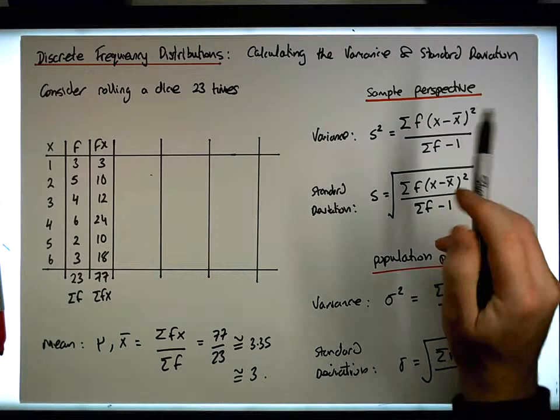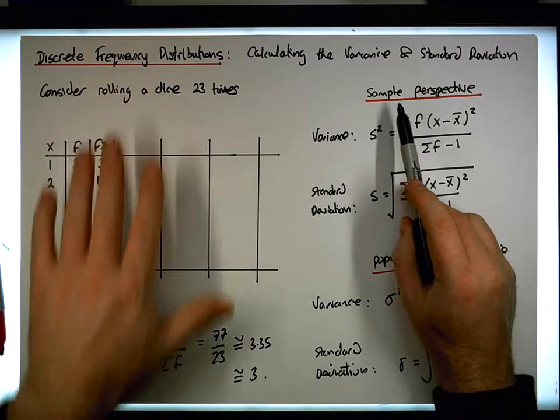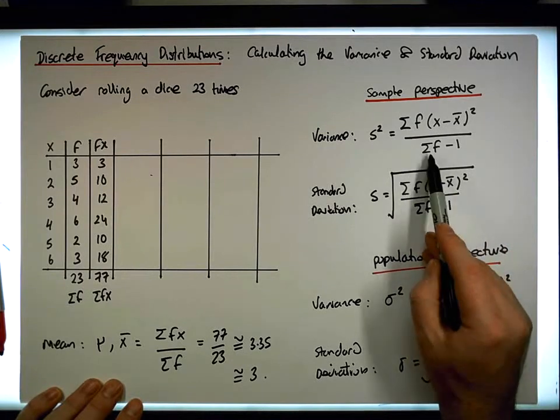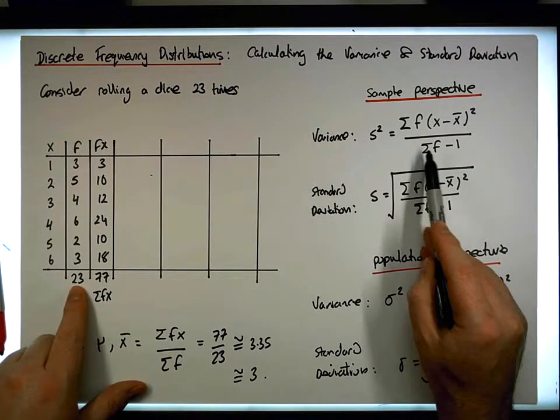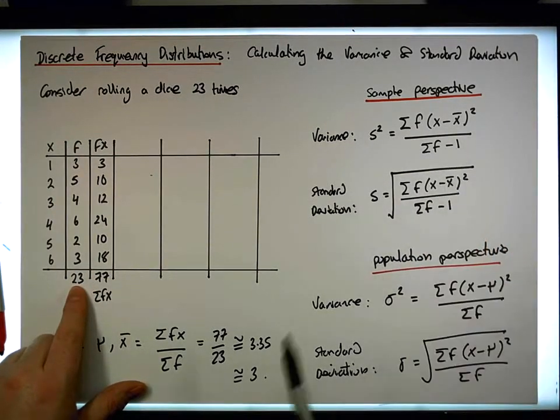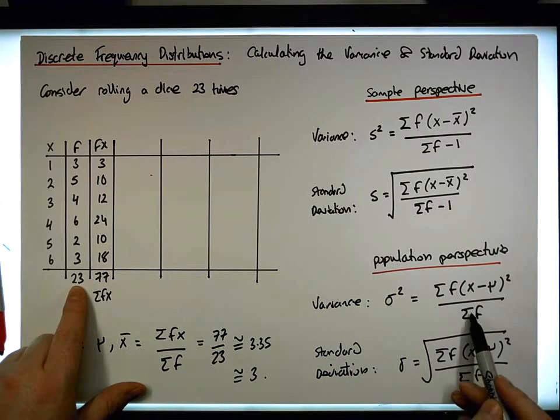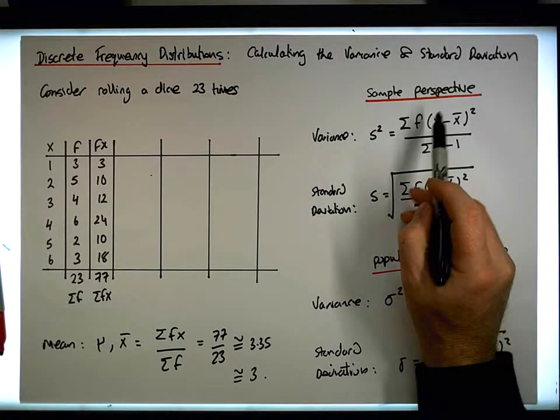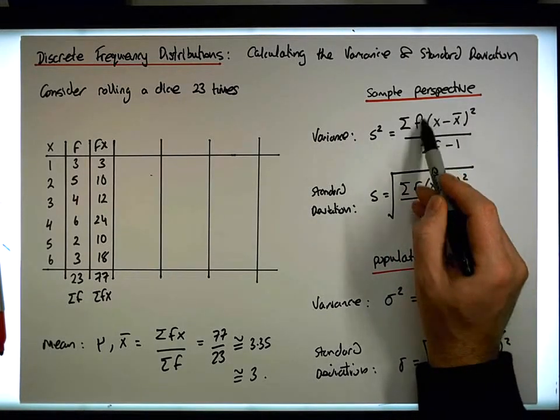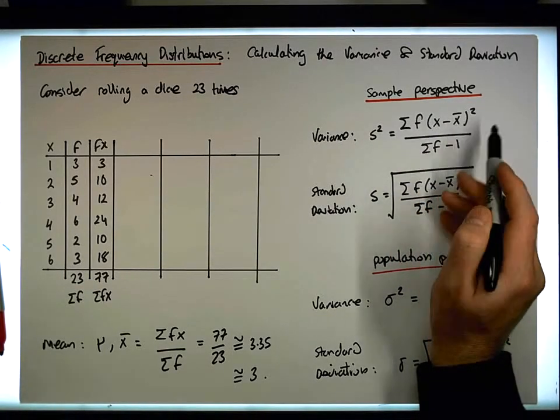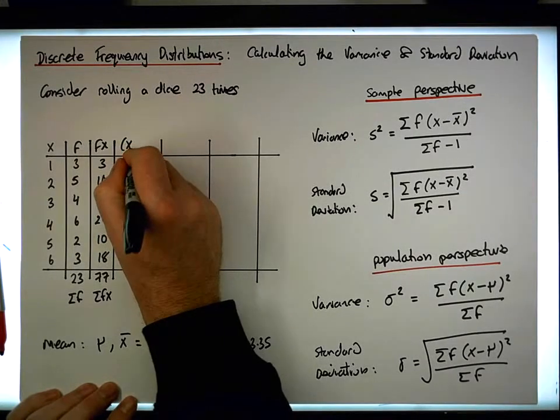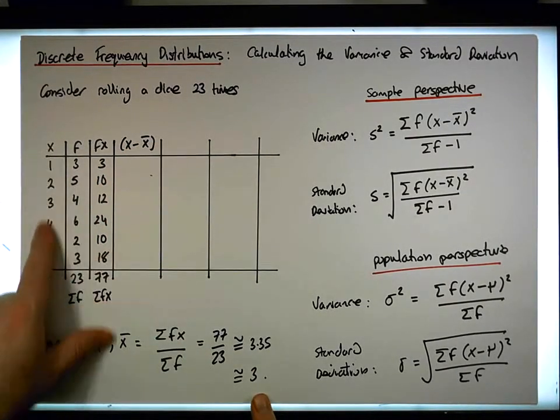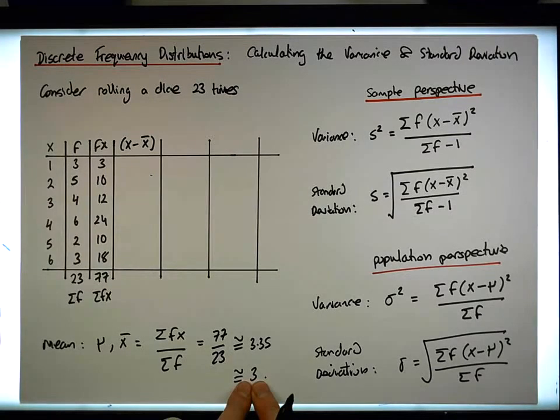What we need to calculate is, if this is from a sample perspective, we need to calculate this number. We know the denominator, the sum of the f's, which is 23 minus 1. So that's 22 here. It's 22 here. It'll be 23 here and 23 here. But to calculate the numerator, we have to do what's inside the brackets. So x minus x bar. So we're going to take the x's and take away x bar. So here's all the x's. And we've just assumed that x bar is equal to 3.